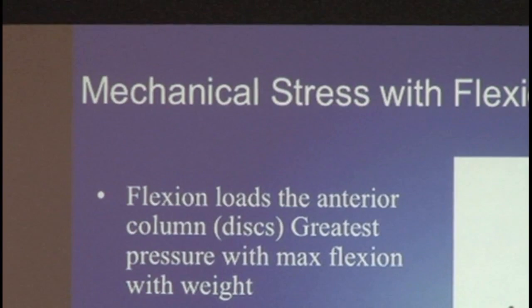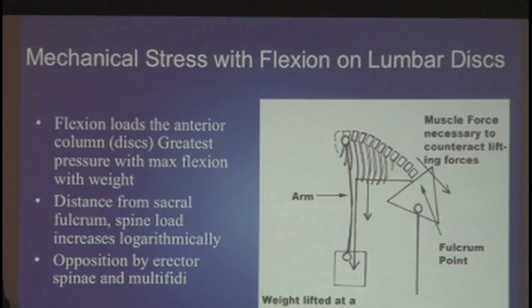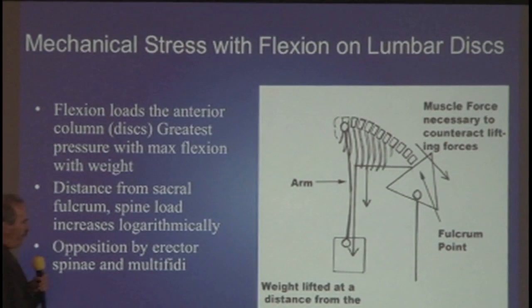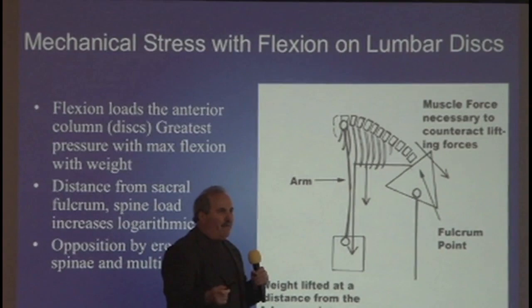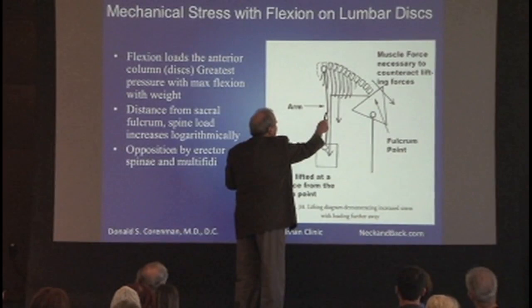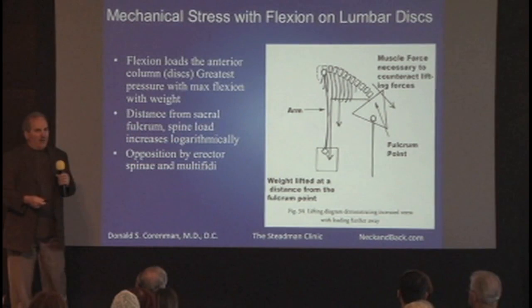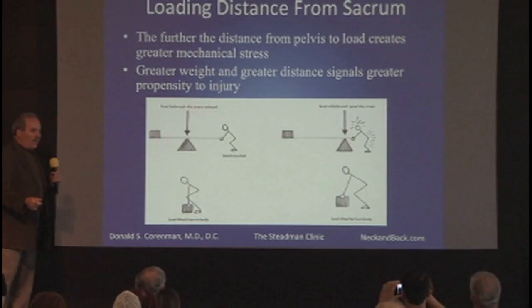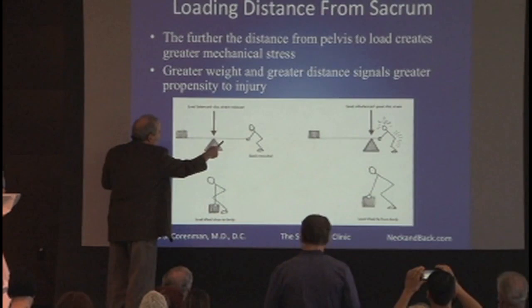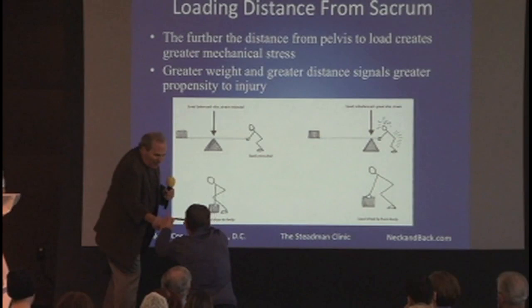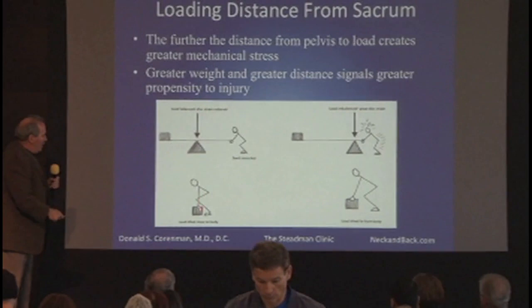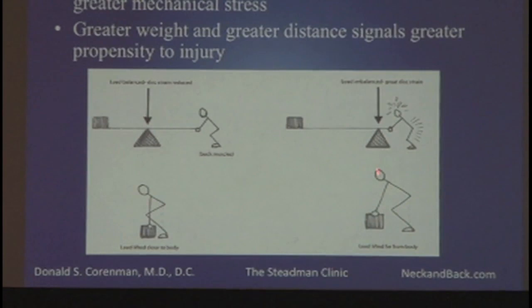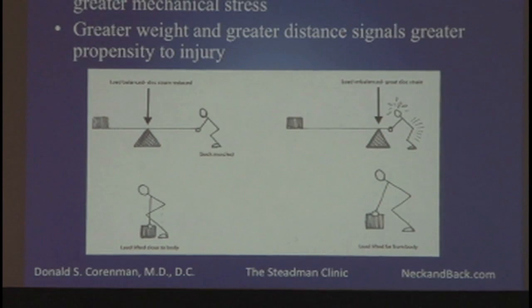Looking at the physics: your fulcrum point is right over your sacrum. As you bend forward, you put more pressure on the sacrum, and the further you reach out, the greater the lever arm and the more you overload it. When you lift close to your center of gravity, the back muscles aren't stressed. When you lift away from your center of gravity, you increase the lever arm and the stress on your back muscles. There are certain positions that do much better than others — you have to learn this.